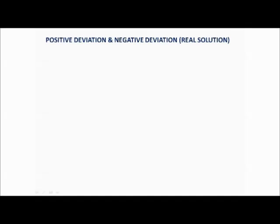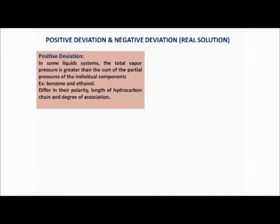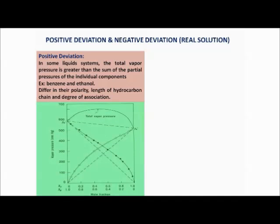Sometimes positive deviation from Raoult's law occurs. In some liquid systems, the total vapor pressure is greater than the sum of the partial pressures of individual components, shown as an elevated dotted line on the graph. Example: benzene and ethanol show positive deviation. This occurs due to differences in their polarity, length of hydrocarbon chain, and degree of association.